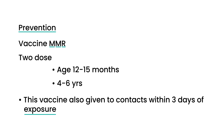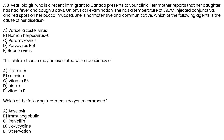Clinical vignette: A three-year-old girl who is a recent immigrant to Canada presents with fever and cough for three days. On physical exam, she has a temperature of 39.7, injected conjunctiva, and red spots on her buccal mucosa. The question asks which agent causes her disease — the clues are conjunctivitis, cough, Koplik spots, and her unvaccinated background. The virus involved is paramyxovirus.